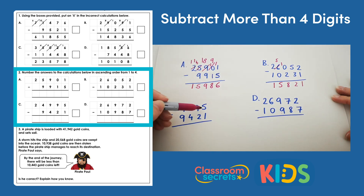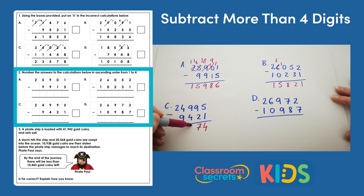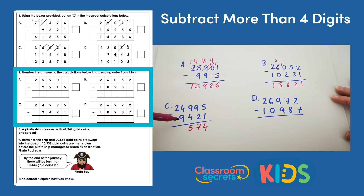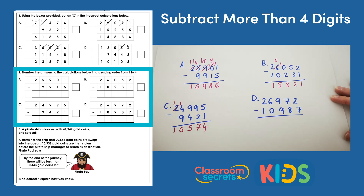C: 5 subtract 1 is 4; 9 subtract 2 is 7; 9 subtract 4 is 5; 4 subtract 9 — we can't do, so we exchange, and then 14 subtract 9 is 5; and then 1 subtract nothing is 1, giving us 15,574.